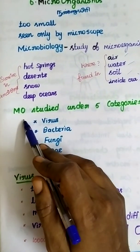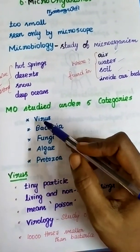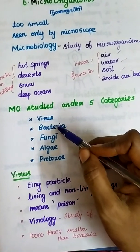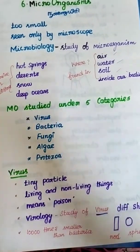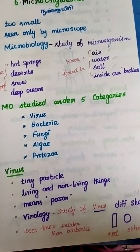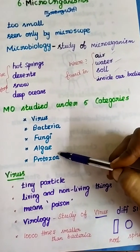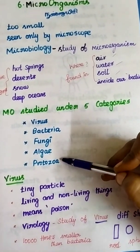Micro-organisms come in varieties. There are 5 categories of micro-organisms that we will study.